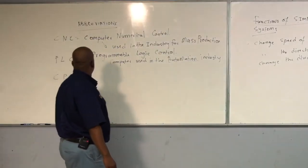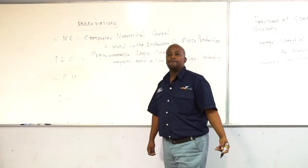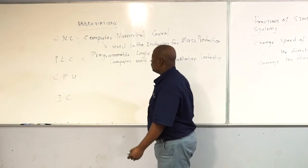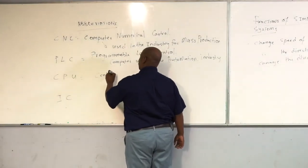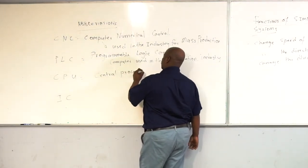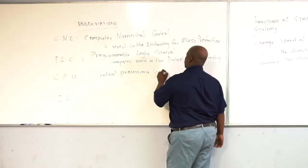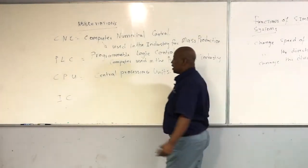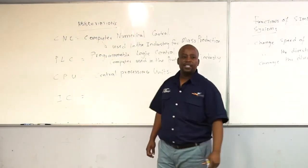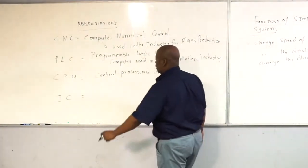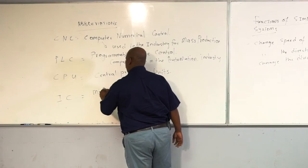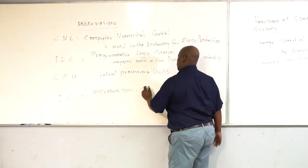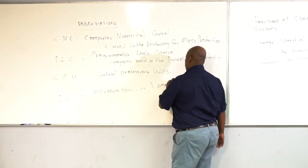Then we have the CPU, the central processing unit. People who are doing computer studies know better about this one. The CPU, central processing unit, is the one that holds the memory of a CNC/PLC system. And lastly, we have the IC — the integrated circuit. Some people call it a microprocessor or a small computer.